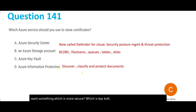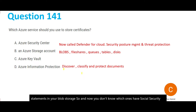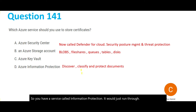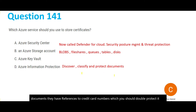Option D is wrong as well. Suppose you have financial statements in your blob storage and you don't know which ones contain social security numbers or credit card numbers. You have a service called Information Protection — it runs through all documents, discovers and classifies them, identifying which documents have references to credit card numbers so you can apply extra protection or encryption at rest. But Information Protection will not help you with storage of certificates.